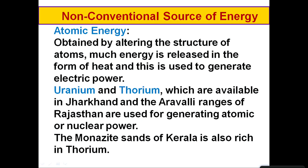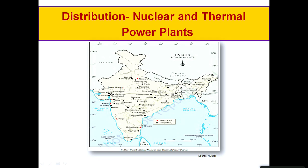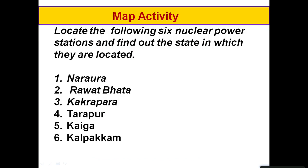Uranium and thorium are the major nuclear minerals, available in Jharkhand and the Aravalli ranges of Rajasthan, and also found abundantly in the monazite sand deposits of Kerala, which are rich in thorium. Map activity: can you locate these six nuclear power stations and identify their states — Narora, Rawatbhata, Kakrapar, Tarapur, Kaiga and Kalpakkam?